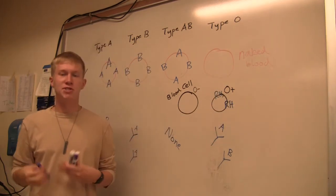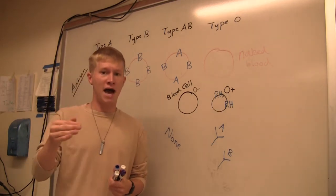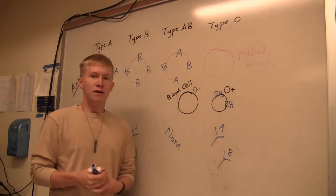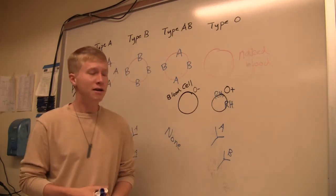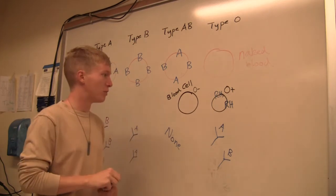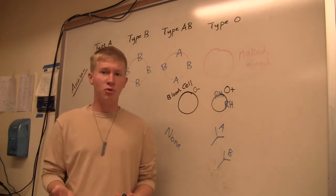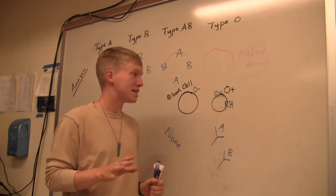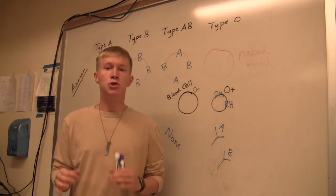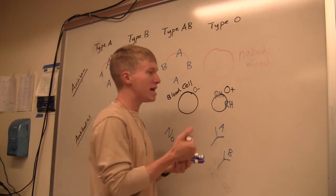Rh is what determines whether your blood is going to be positive or negative, whether you have that antigen or not. The antibody relationship is similar to blood, but there's a little catch-22 to it with the Rh factor. If you were born with O negative blood, assuming that you've never had an exposure to any type of positive blood, you would not have antibodies.